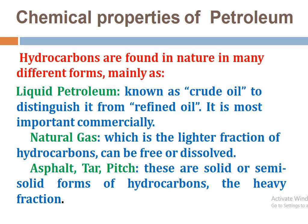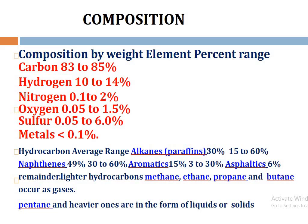Hydrocarbons are found in nature in many different forms. The first is liquid petroleum, also known as crude oil, distinguished from refined oil. The second is natural gas, which is the lighter fraction of hydrocarbon and can be free or dissolved. The third is asphalt, tar, or pitch — these are the solid or semi-solid forms of hydrocarbon, also called the heavy fractions.